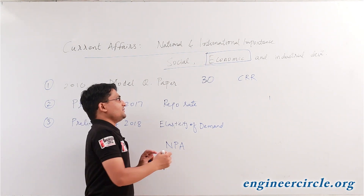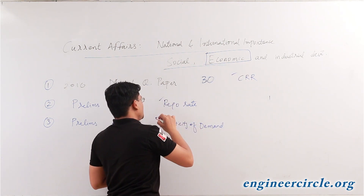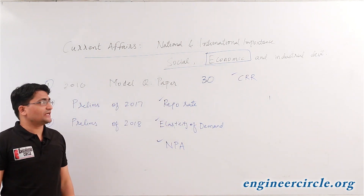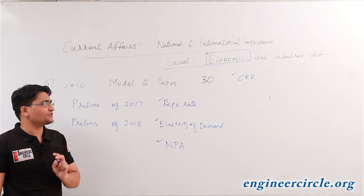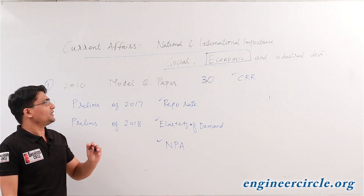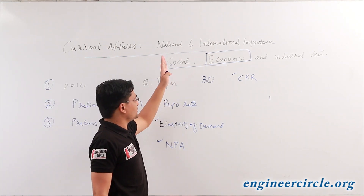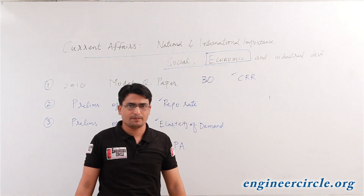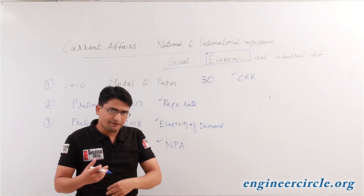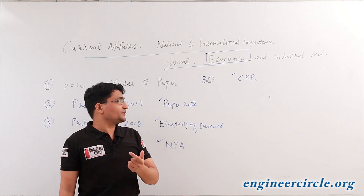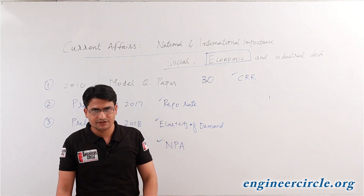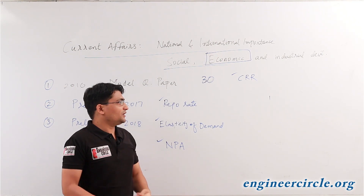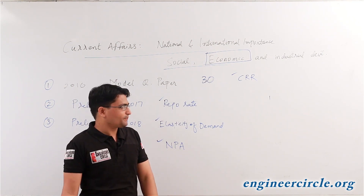We can interpret that since all these questions consistently ask us about basics, we must first cover the basics of all three things: social development basics, economic development basics, and industrial development basics. After that, we will further dwell into current affairs relating to these issues. So what could be the current affairs? Again, we have these three sources only.